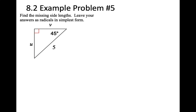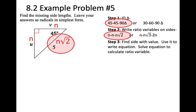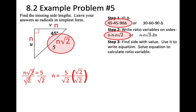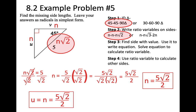Example problem 5: Step 1, it's a 45-45-90 triangle. Step 2, ratios are N, N, N root 2. Step 3, the hypotenuse equals N root 2 and has value 5, so N root 2 equals 5. Divide both sides by root 2, giving N equals 5 over root 2. Since we can't have a root in the denominator, multiply by root 2 over root 2 — the numerator becomes 5 root 2 and the denominator becomes 2. So N equals 5 root 2 over 2. Step 4: U equals N, which is 5 root 2 over 2, and V equals N, which is also 5 root 2 over 2.